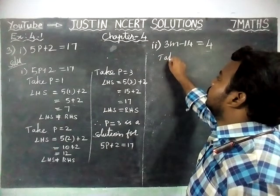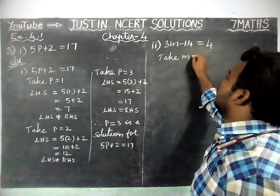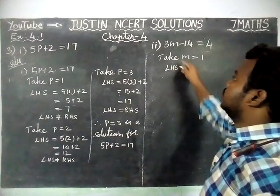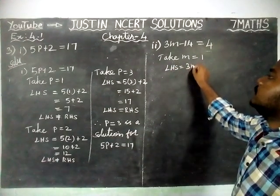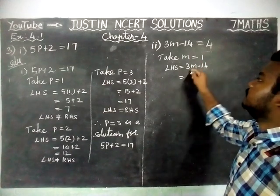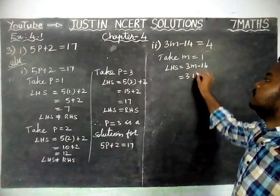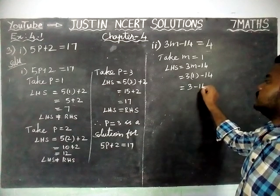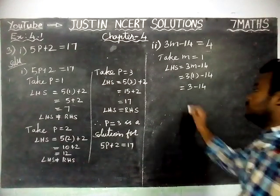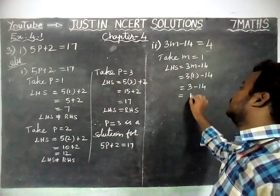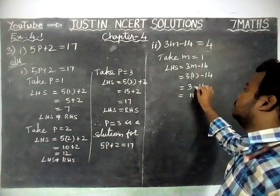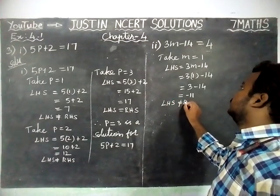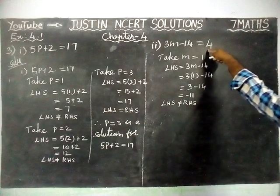We are going to take M is equal to 1. We will start with 1 itself. Now, LHS is equal to 3M minus 14, that is 3 into 1 minus 14 is equal to 3 minus 14. Signs are different, so we find the difference: difference is 11, and since 14 is the greatest number with a minus, the answer is minus 11. Here, LHS is not equal to RHS, because right hand side value is equal to 4.